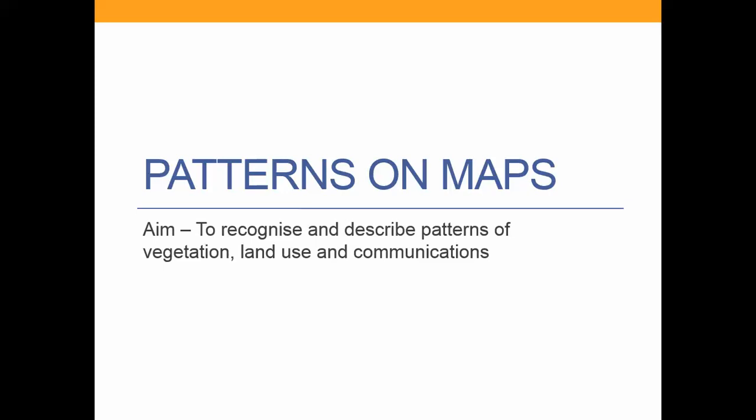There are three basic things you can be asked to describe: vegetation patterns, land use patterns, and communication patterns. Communications means road networks, rail networks, anything which you can use to communicate with another group.